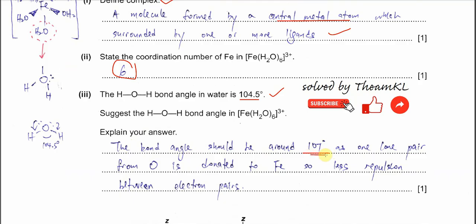Because oxygen has one lone pair and three bonding pairs in the complex, the HOH bond angle is around 107°. One lone pair from oxygen is donated to the iron ion, so there is less repulsion between electron pairs than in free water molecules, where there are two lone pairs causing more repulsion.